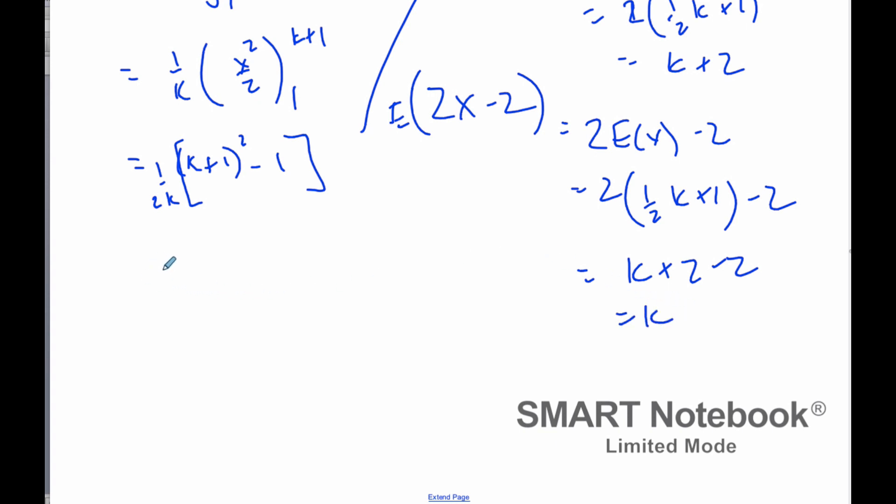So, an unbiased estimator for k is 2X minus 2, because when I do the expected value of this statistic, I end up with k.